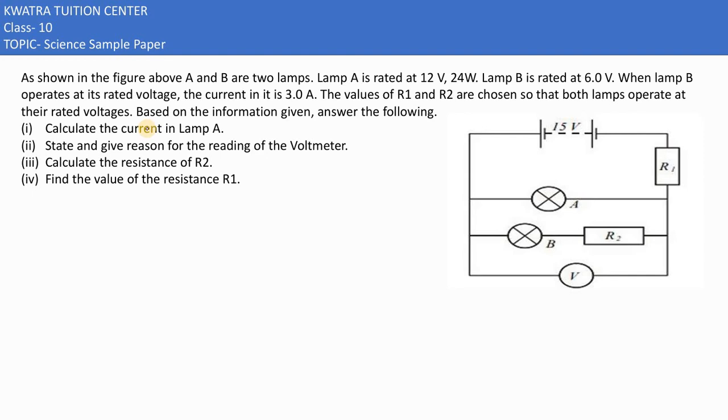Let's have a look at the next question, we have question 36. This is part B. Now they are saying as shown in the figure above, A and B are two lamps.